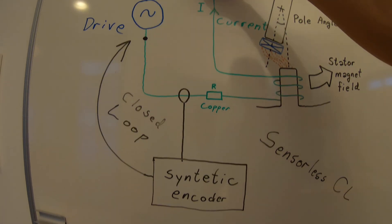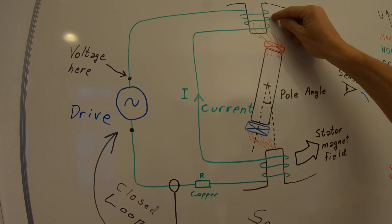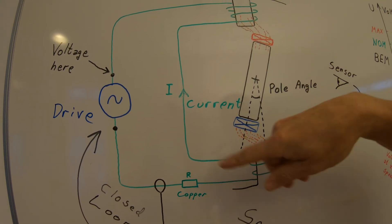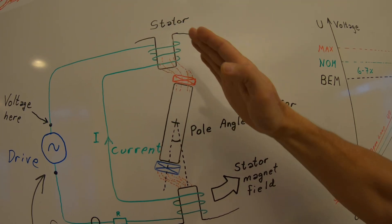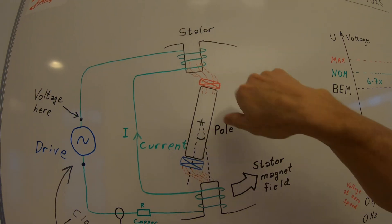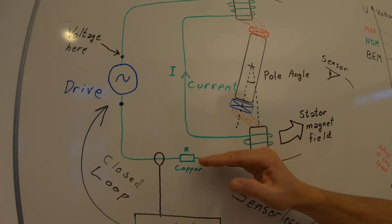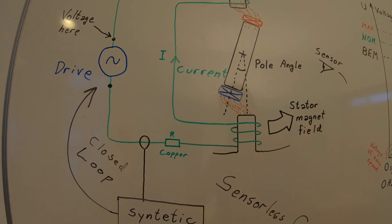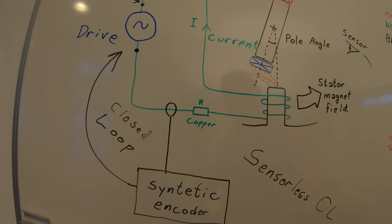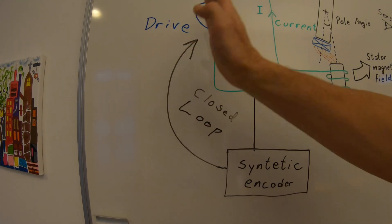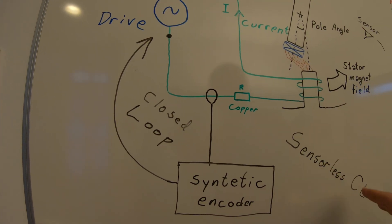We're just running a fixed current to the stator winding and we start rotating with an over magnetized motor and when we get it up to speed and we get a sensible curve shape back to the synthetic encoder then we take over with the synthetic sensorless closed loop.